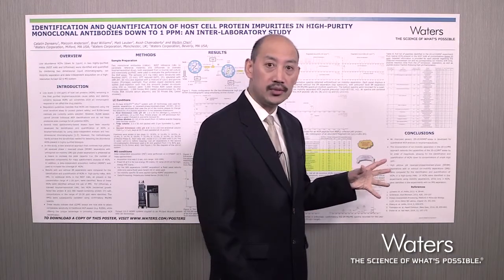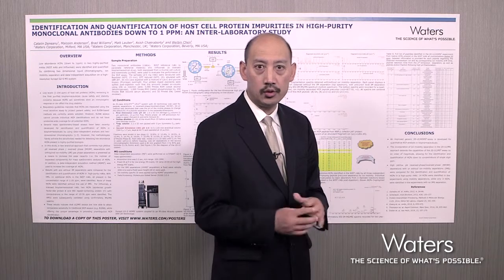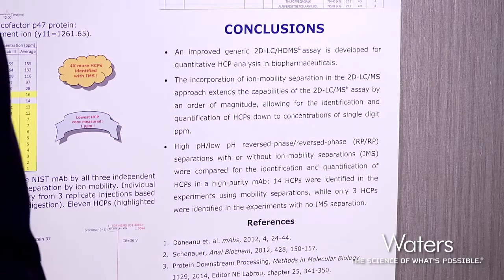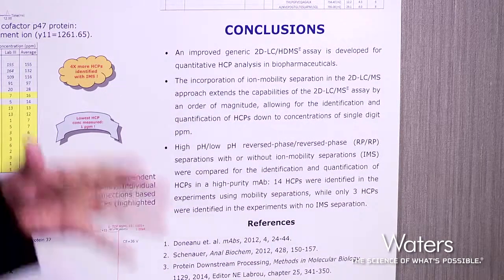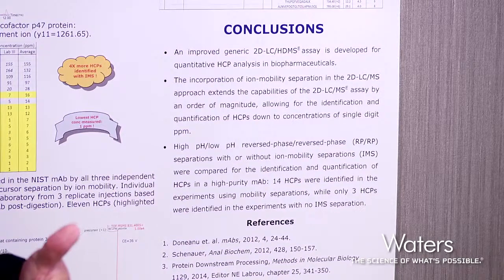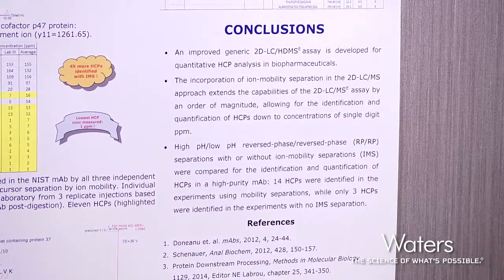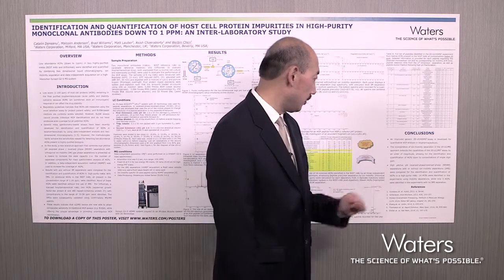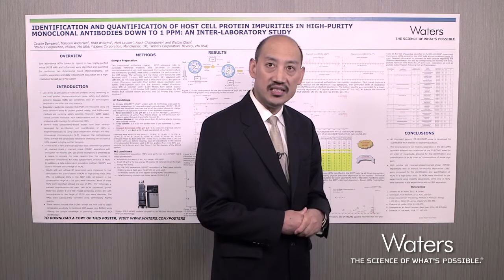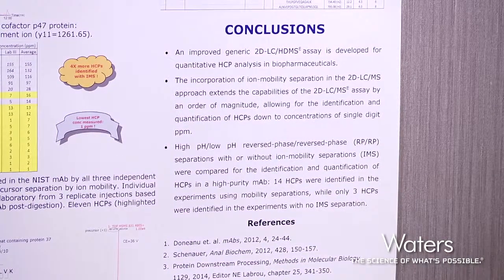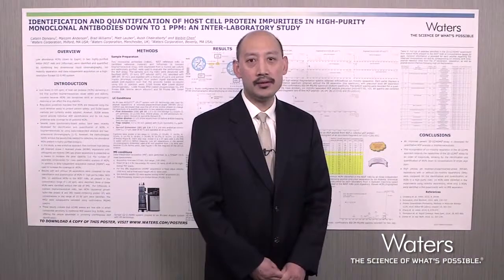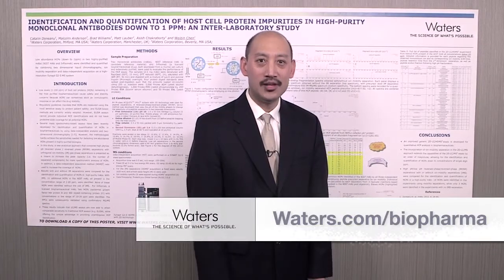In conclusion, this poster presents recent development from Waters for host cell protein analysis using LC-HDMS²E. The success of this assay is contributed by three main factors: first, two-dimensional chromatography; second, ion mobility incorporation; and third, the CSH column chemistry. The capability is clearly demonstrated using the NIST sample, a common reference sample, and we compared results with and without ion mobility to clearly identify the role of ion mobility in host cell protein analysis. For more information, please visit waters.com. Thank you for your attention.